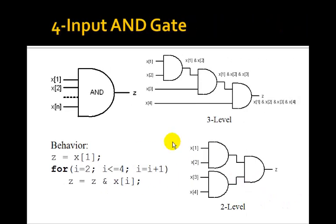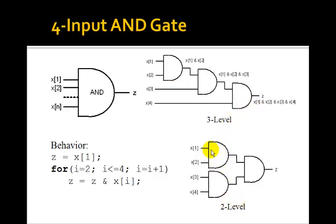We can produce this multiple-input AND gate using two-input AND gates. For example, a four-input AND gate can be made using three AND gates, as shown here. Or, this is a three-level one — you can make a two-level one, where the output of the first gate is x1 and x2, the output of the second is x3 and x4, and then you AND them all together.